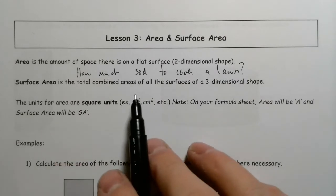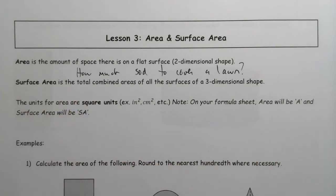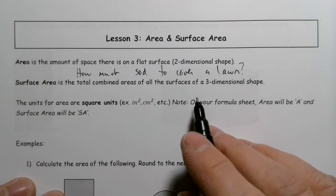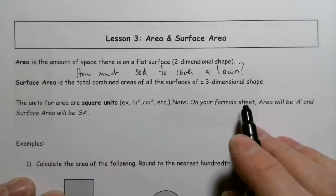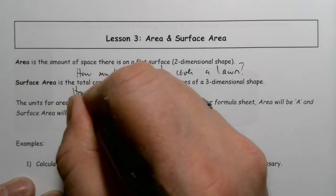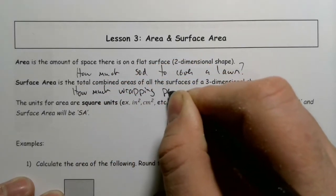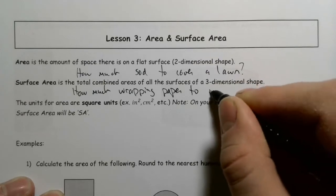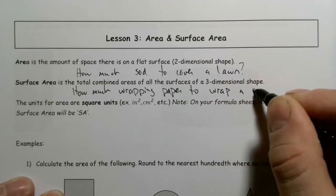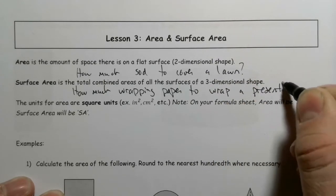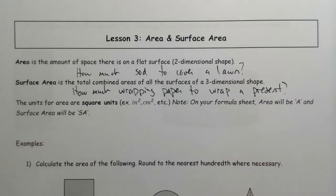Surface Area is a little bit different because it combines the areas of all the surfaces on a three-dimensional shape. A question appropriate here would be: how much wrapping paper to wrap a present? Because you have to wrap it all around the three-dimensional shape, whereas with area you're just worried about one two-dimensional surface.